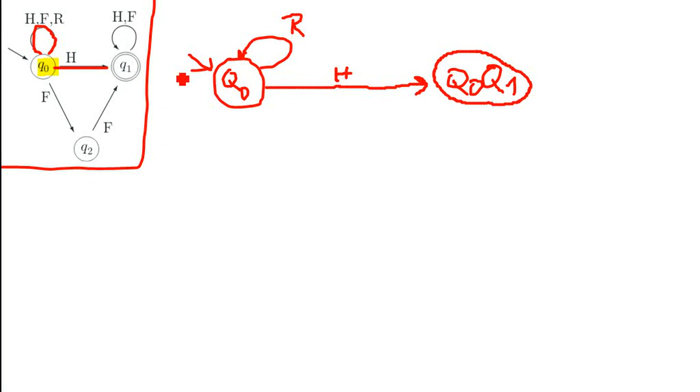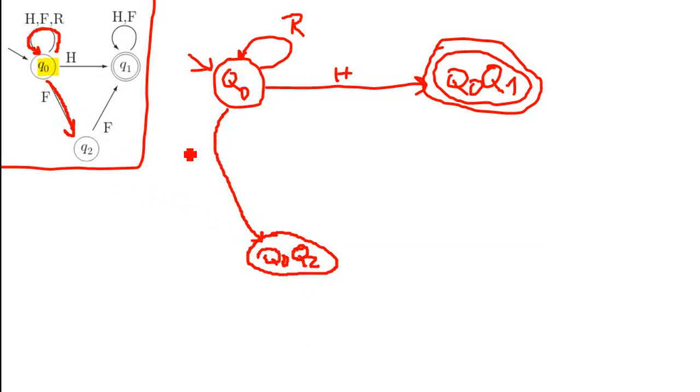By the way, one of these two states, Q1, is a final state. So this combined state is also a final state. Next, let's look at what happens if we put in an F. F gives us Q0 and Q2 as a next state, so we create a new state Q0, Q2, and we get into this state if we put in an F.